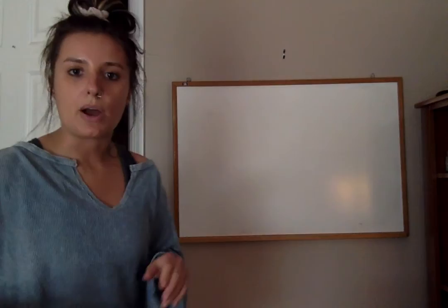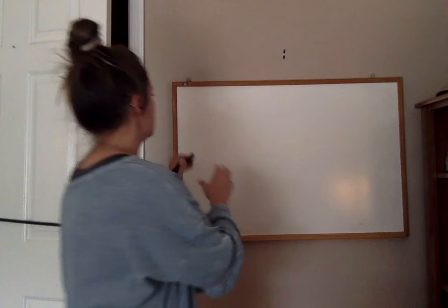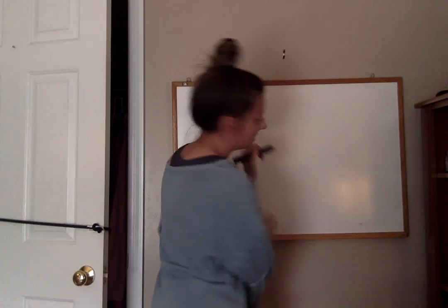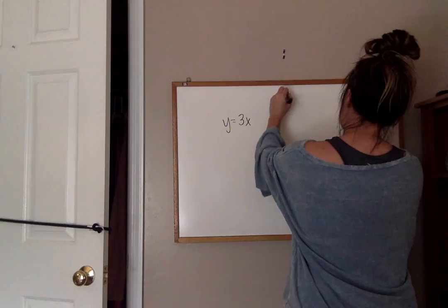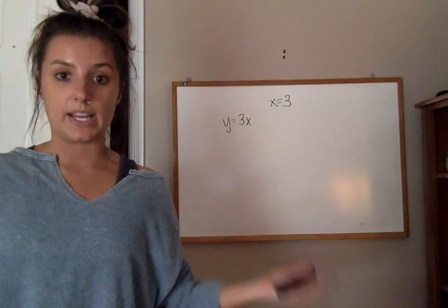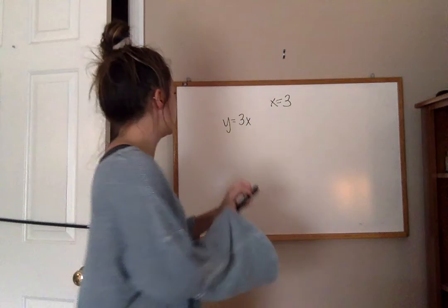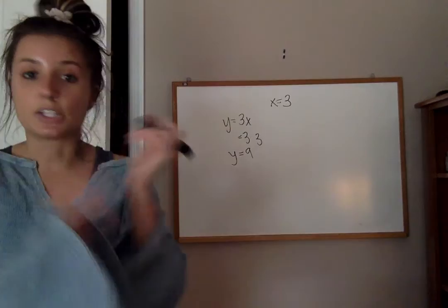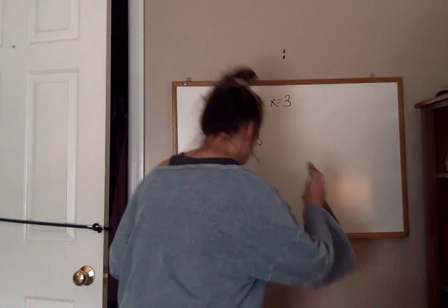Let's think about what it means to substitute something in. Say I give you y equals 3x, and I tell you x equals 3, and I say substitute that x in to tell me what y is. Well, you're going to plug this 3 in for that x — you're going to substitute it in. So you'll do 3 times 3 and you'll get 9. You just substituted a value in for a variable to solve for another one. That's pretty much what we're doing here, except it's a little more lengthy because we have two equations of lines.